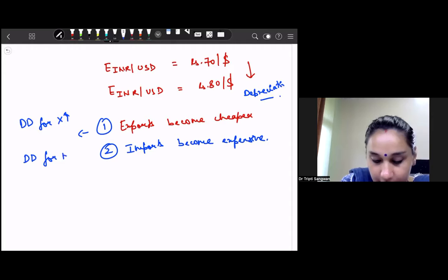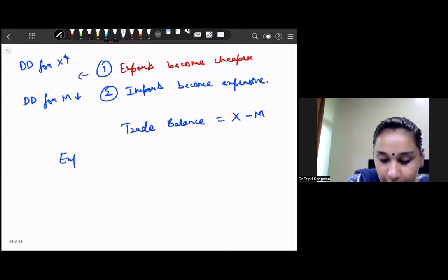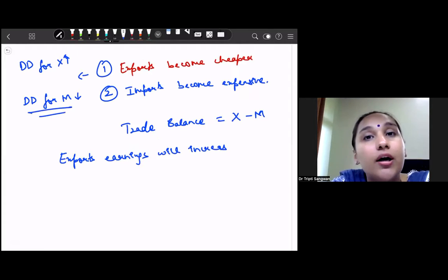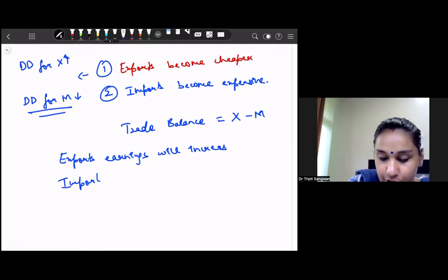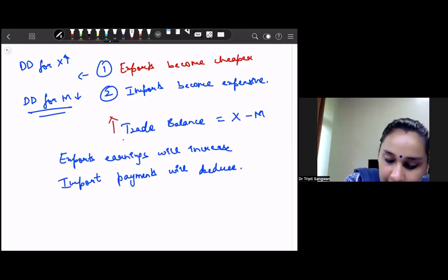So when this happens, demand for exports will increase and demand for imports will reduce. And what is trade balance? Trade balance is export minus import. So when demand for exports will increase, which means that our export earnings will increase, and when our demand for imports reduces, it means our import payments will reduce.